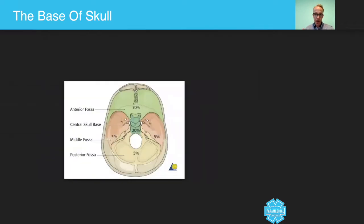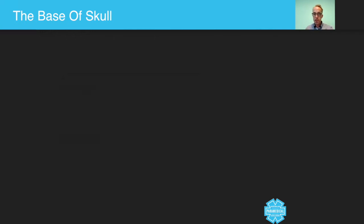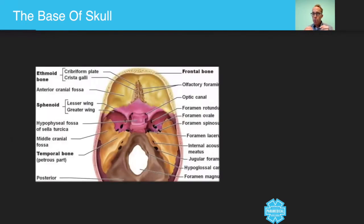And that's this one here, anterior fossa, central skull base, middle fossa, posterior fossa. It even gives you a percentage on this image here. If you wanted to look at a little bit more detail, you can see how there are openings, which allow the cranial nerves and other structures to exit through them.